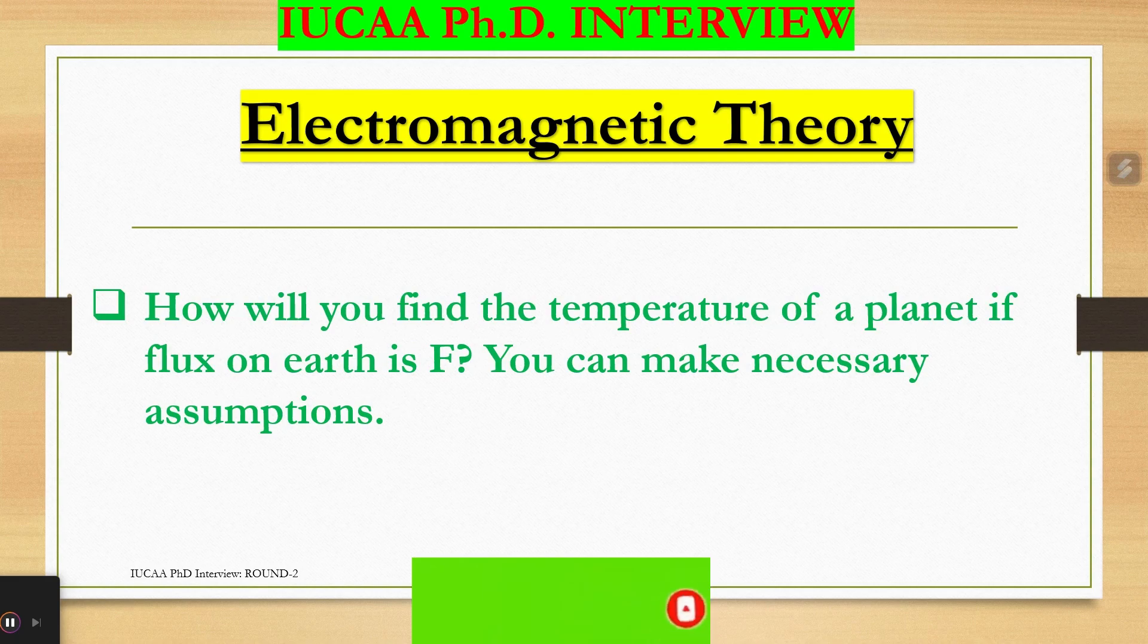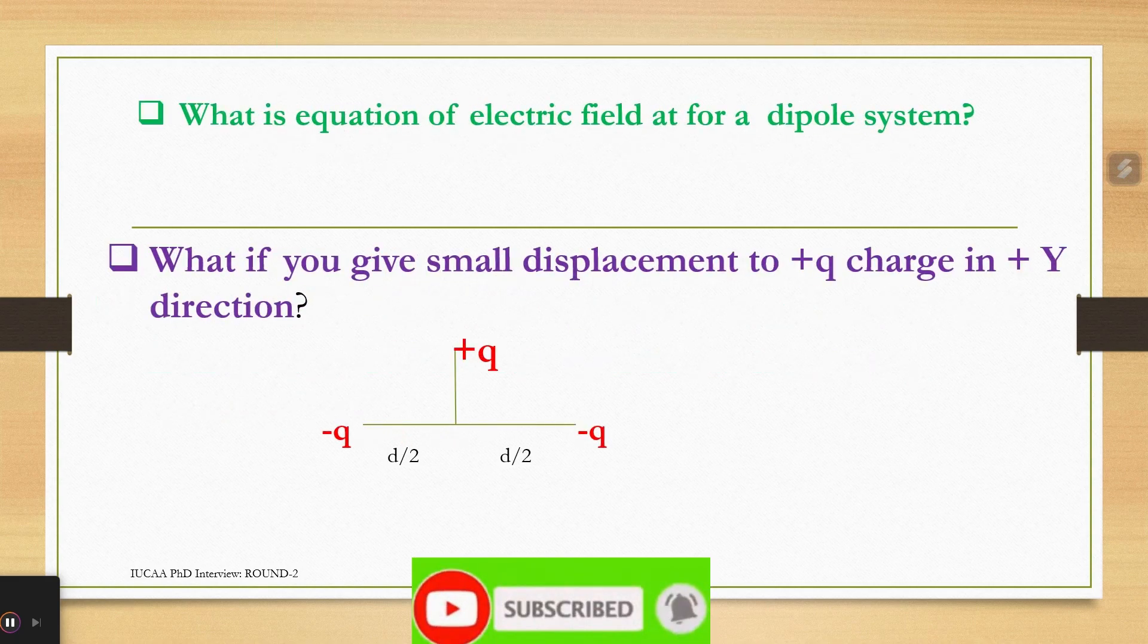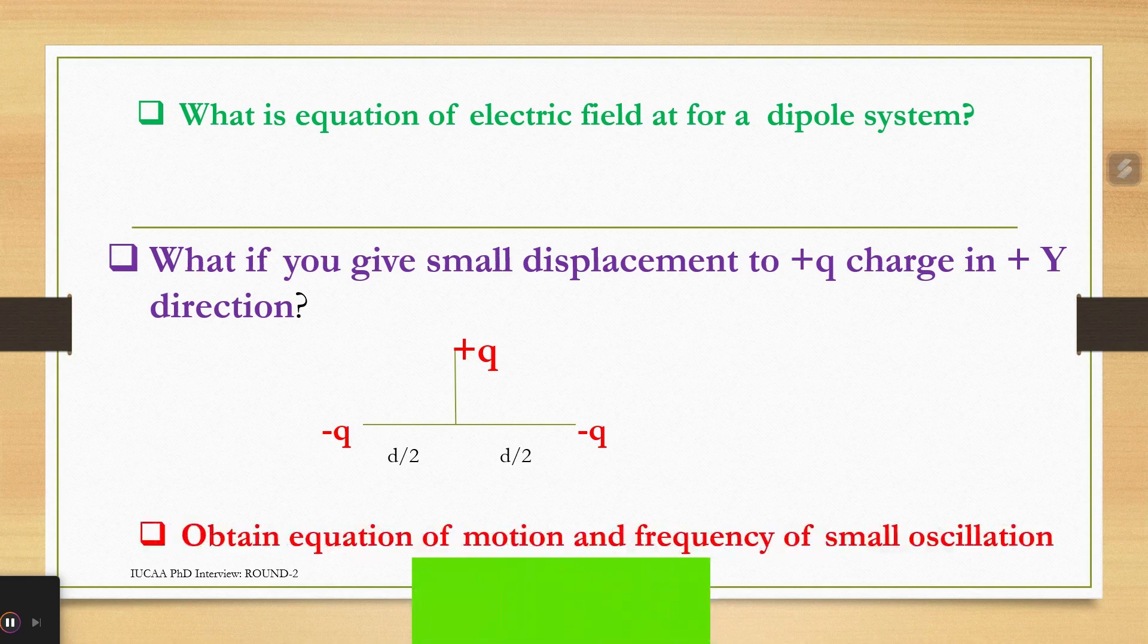Now this time questions were from electromagnetic theory. What is equation of electric field for a dipole system? What if you give small displacement to plus Q charge in plus Y direction? Obtain equation of motion and frequency of small oscillation.